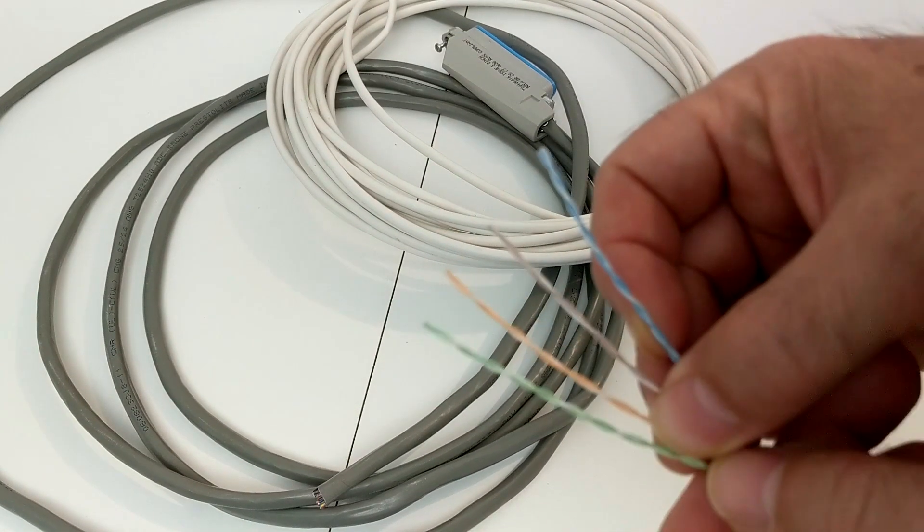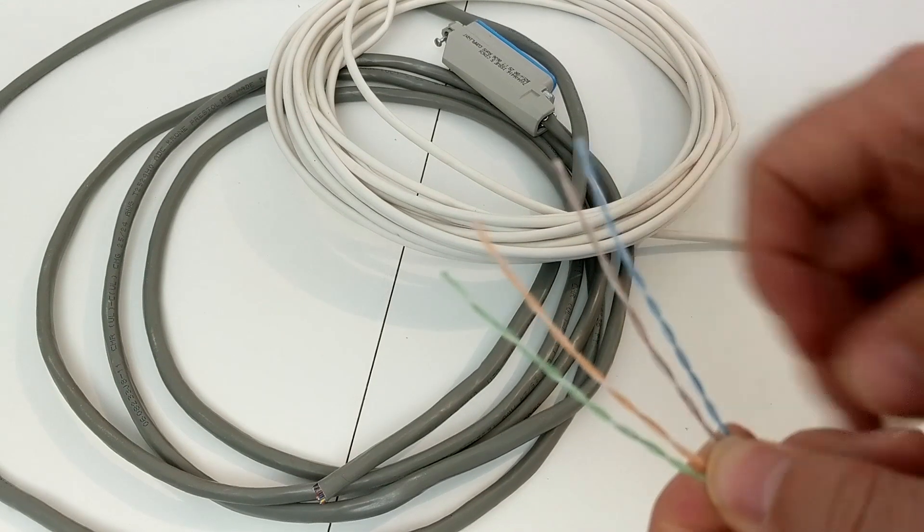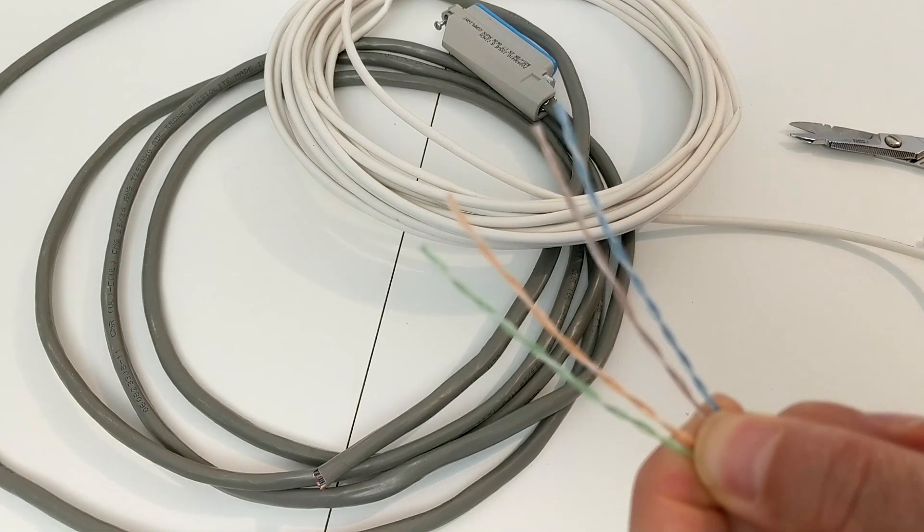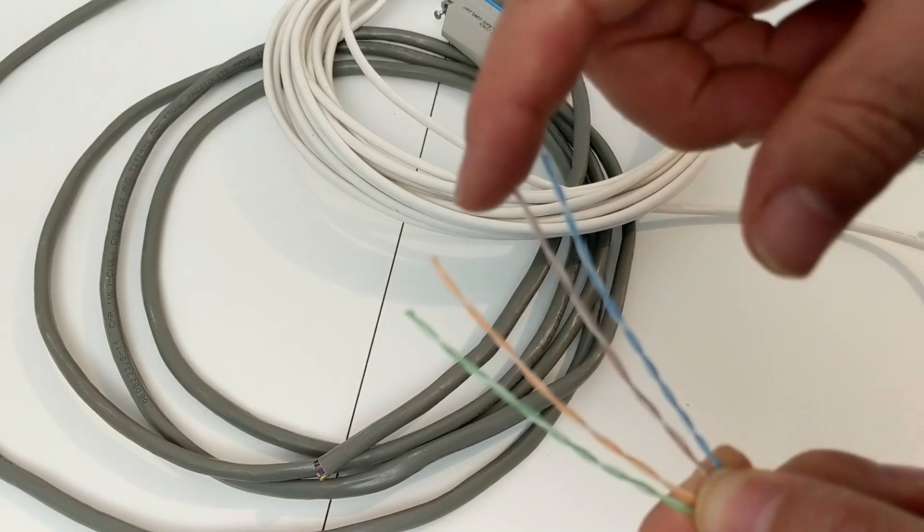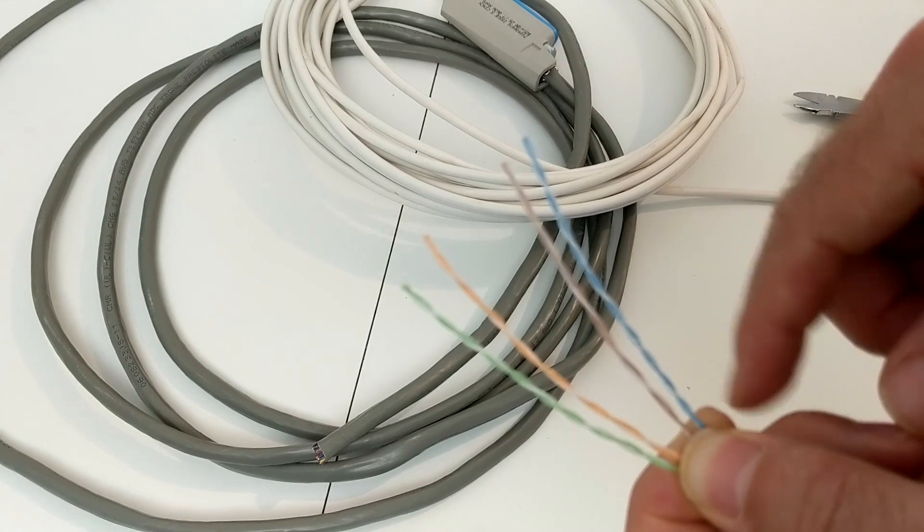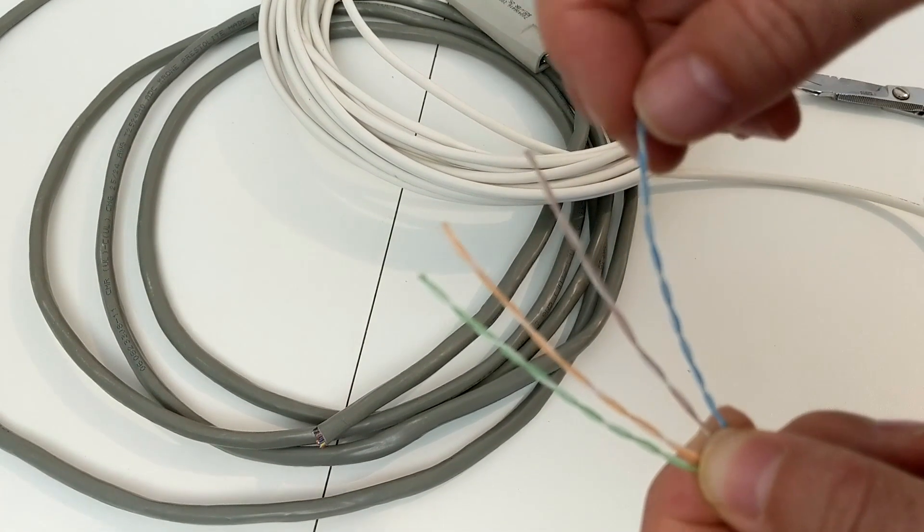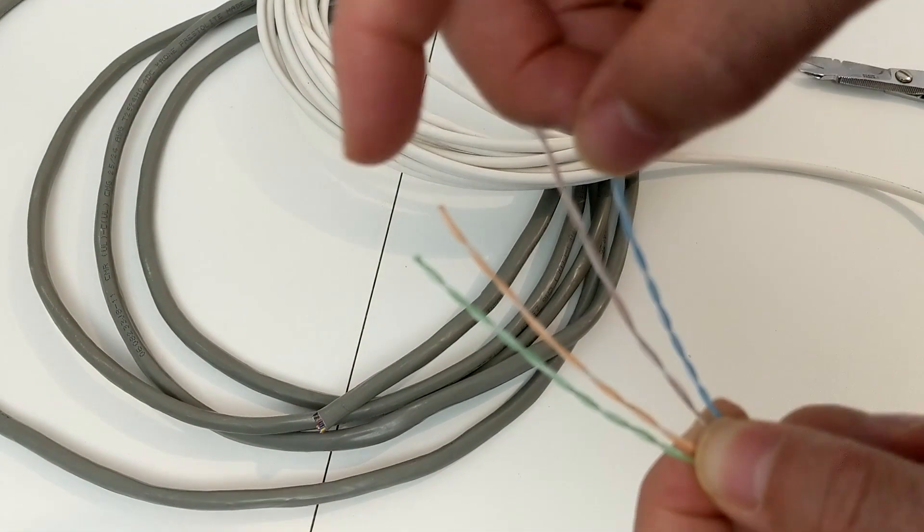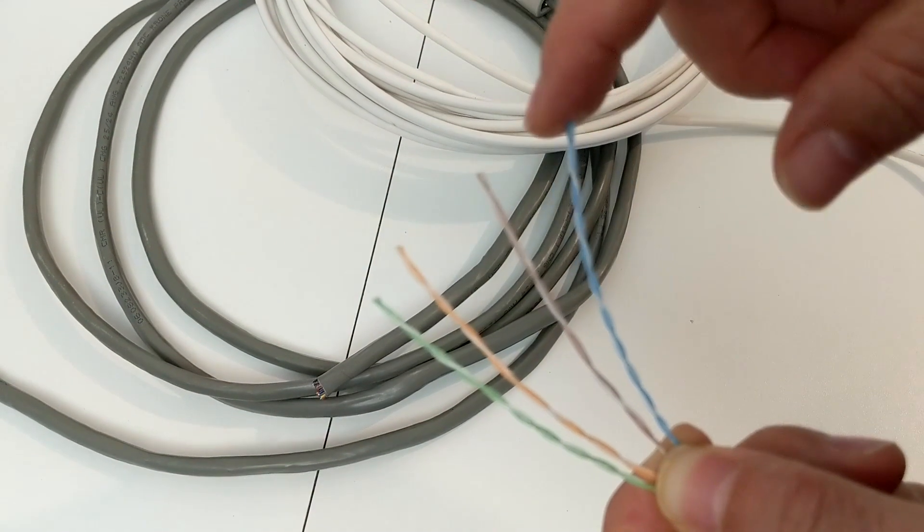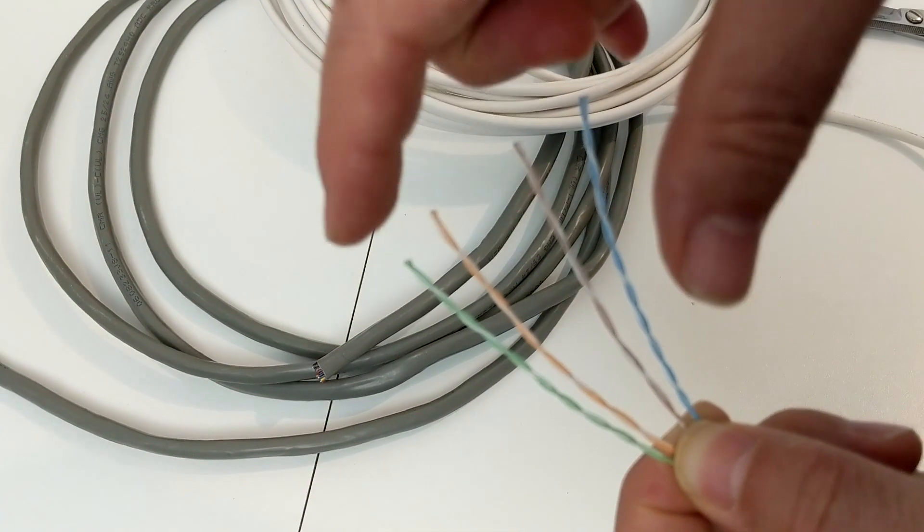This is a pretty typical network cable, a category 6 cable with four pair in it. Notice I'm using the word pair and not wire—that's because each one of these is actually two wires. So there's a total of eight wires inside a network cable grouped by pairs. I've got a blue pair, an orange pair, a green pair, and a brown pair, and they go in that order: first pair, second pair, third pair, fourth pair.